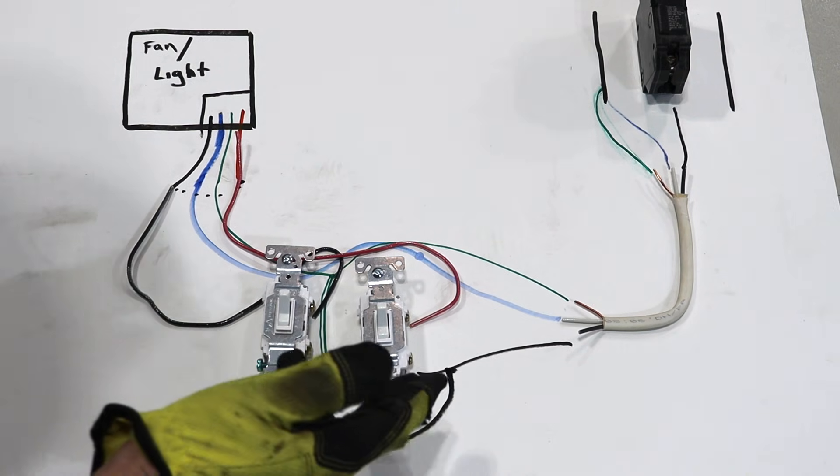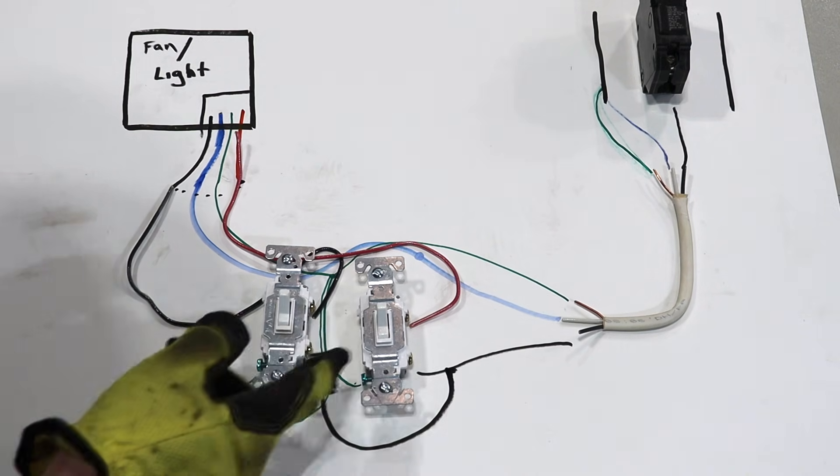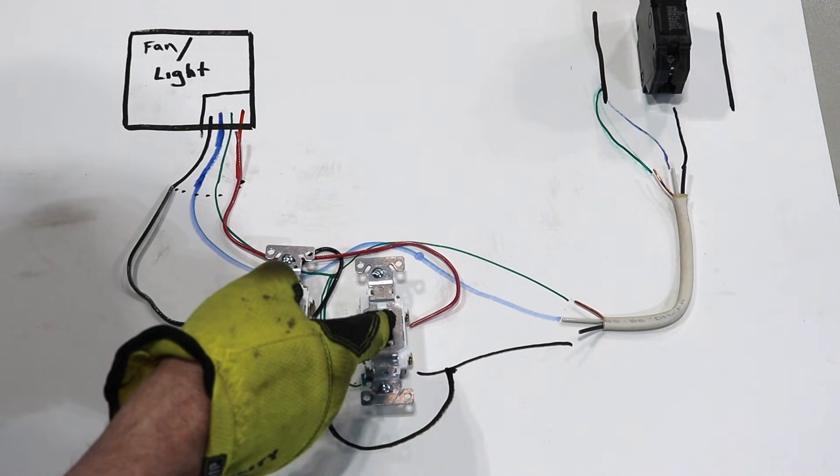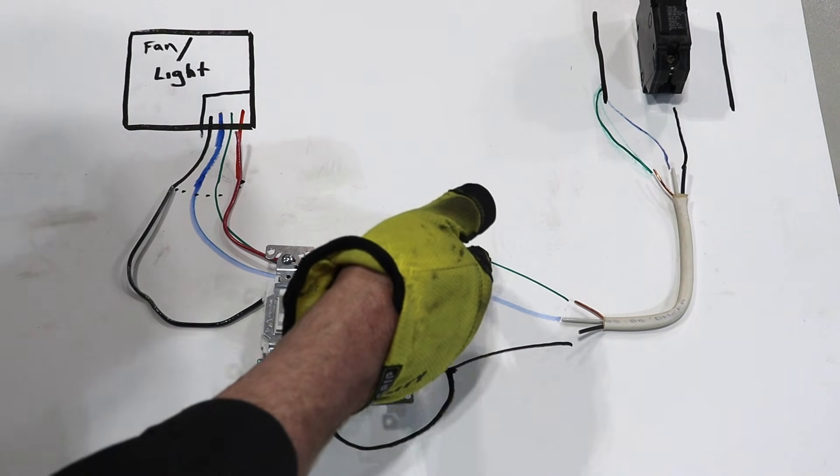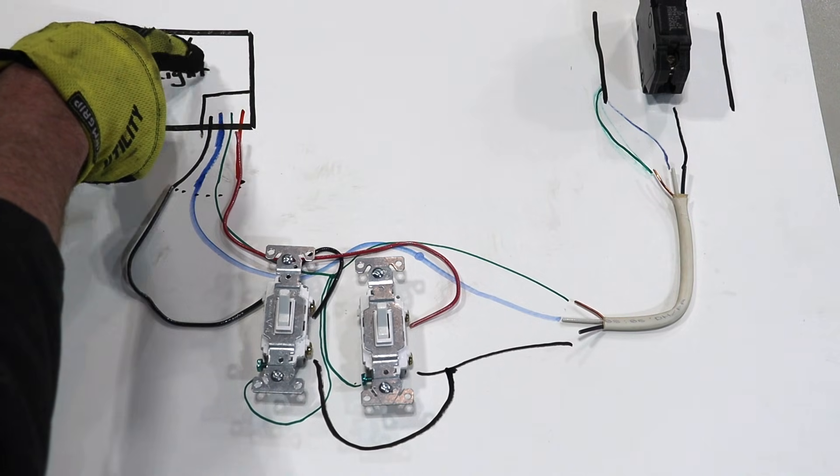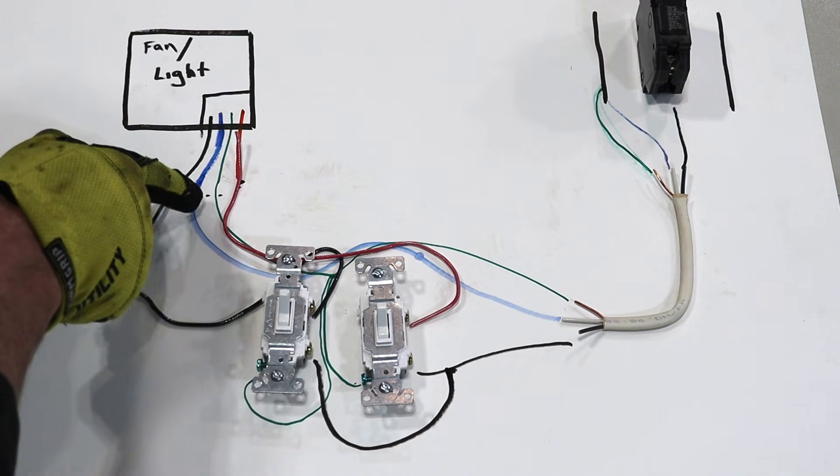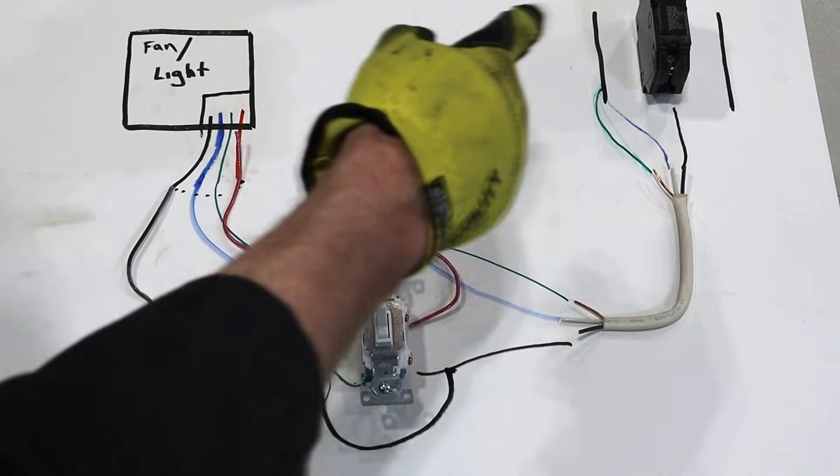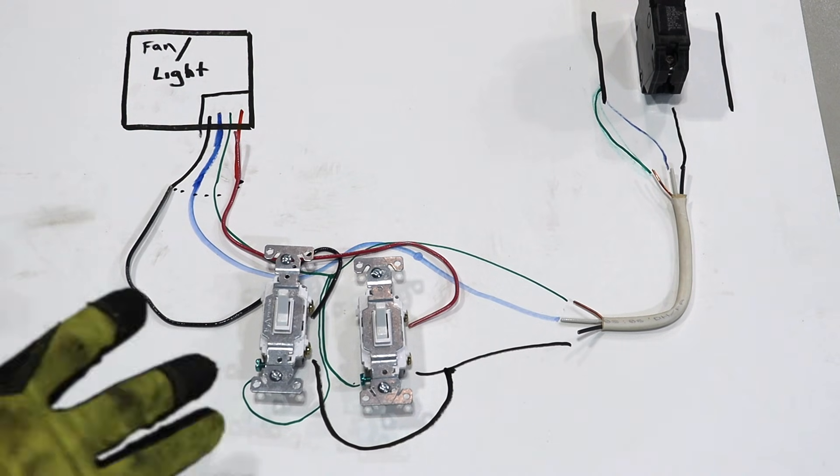Same thing with a fan, if I want the fan on I turn the switch on and then the power goes through the red wire up to the fan and then also it returns back through the neutral back to the panel box completing your circuits.